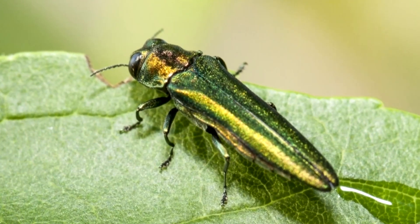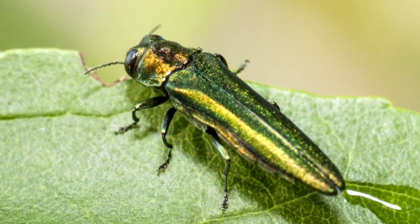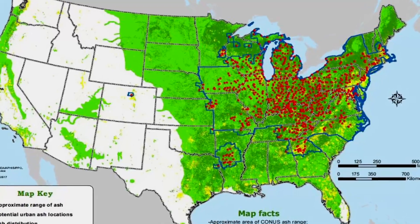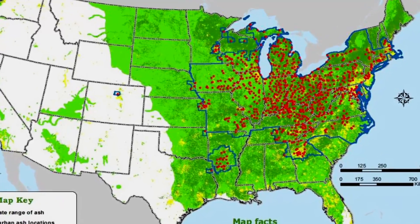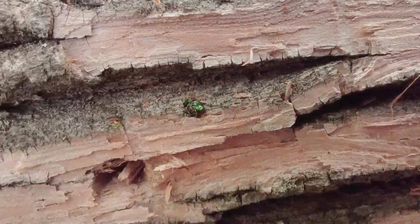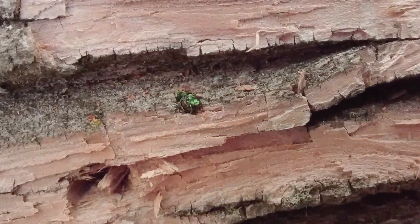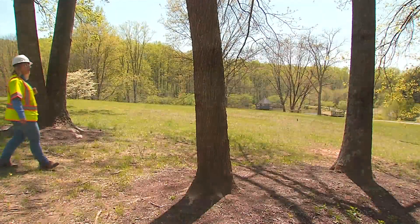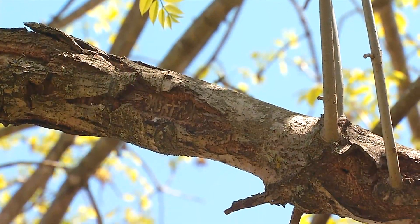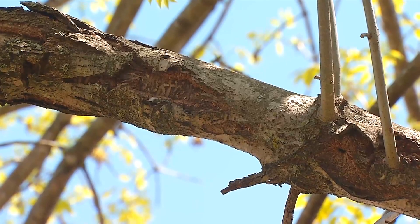The emerald ash borer is a non-native insect from China and Japan that was introduced to Michigan and has since been spreading throughout the United States and Canada. It will specifically target any species of ash trees because ash trees in North America have no evolved resistance, making there a big threat of ash trees becoming extinct across the United States and Canada.